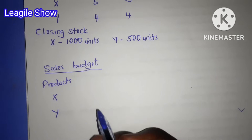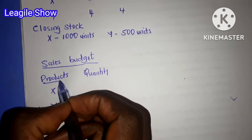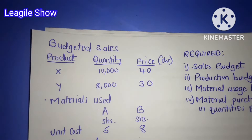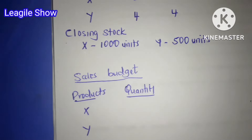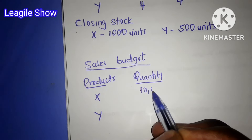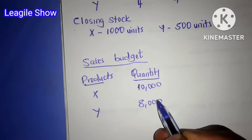Next, we'll be looking at the quantity for each product. We go back to our question here. We are having the budgeted sales and the quantity for these products is given — X is 10,000 and Y is 8,000. So we come and include them here: X was 10,000 and Y, the quantity from the question, is 8,000.